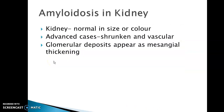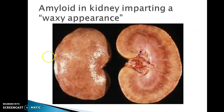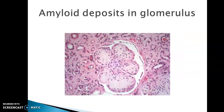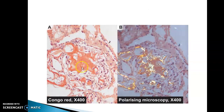Specific patterns of amyloidosis in various organs: In the kidney, the kidney is normal in size and color, and in advanced cases it is shrunken and vascular. Glomerular deposits appear with mesangial thickening, and amyloid in the kidney gives a waxy appearance. Mesangial deposits are confirmed by Congo red staining, giving apple green birefringence on polarizing microscope.